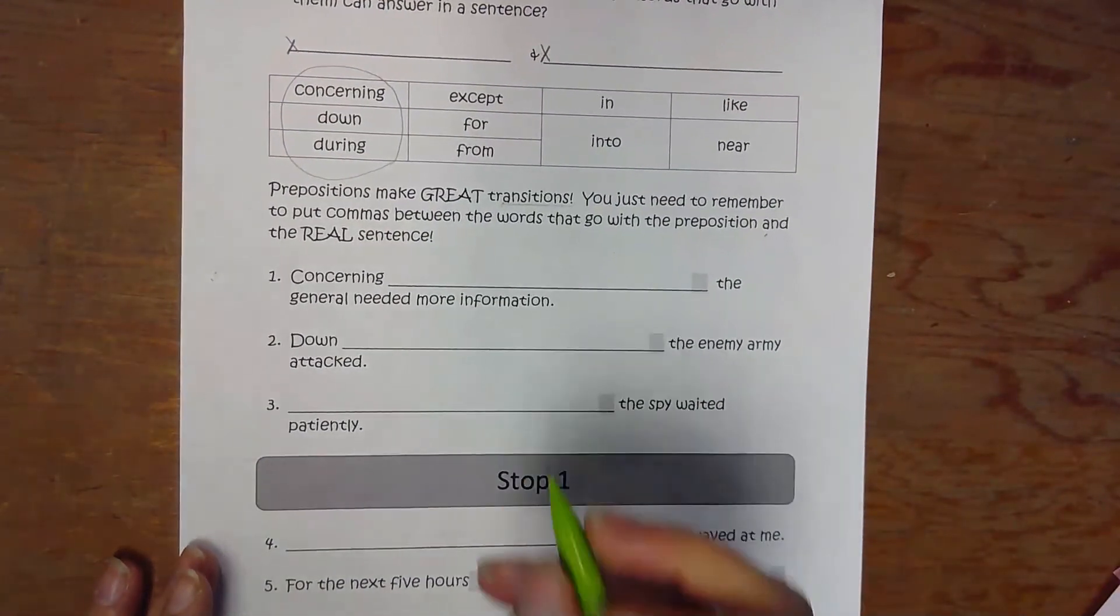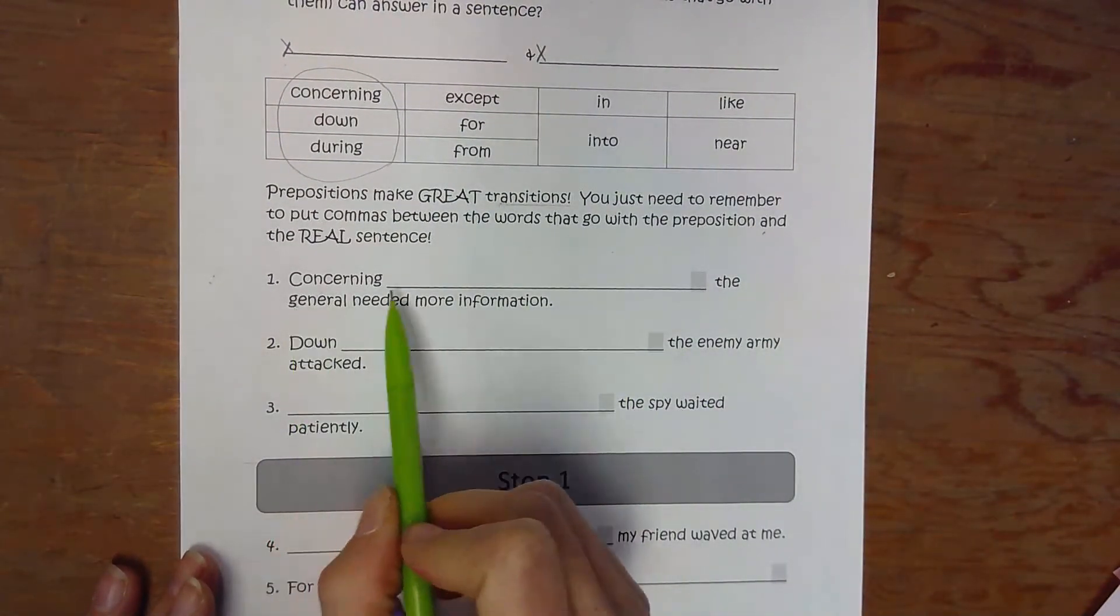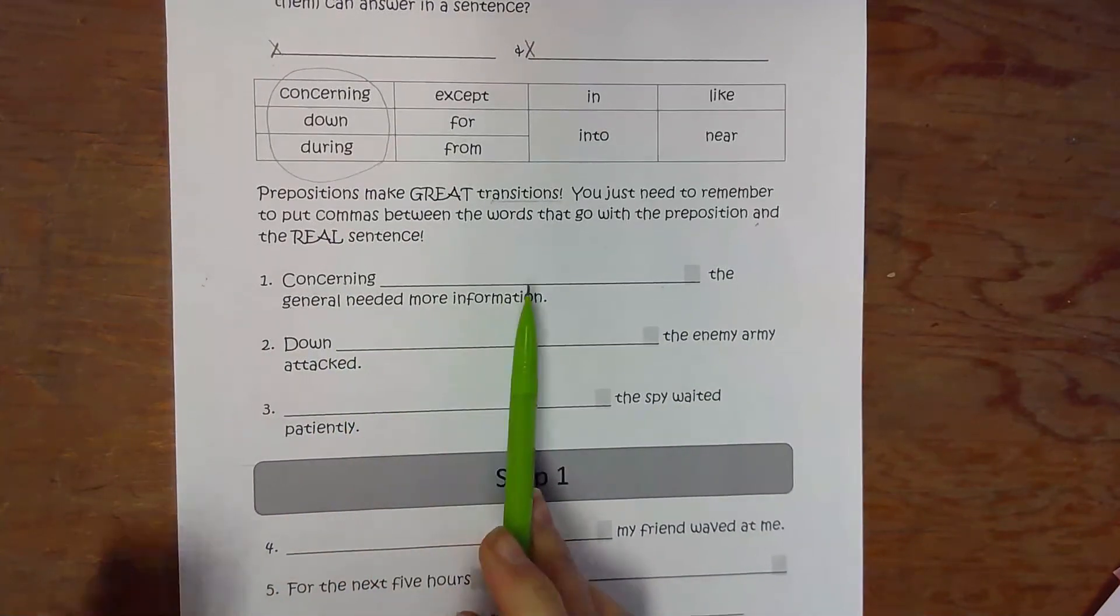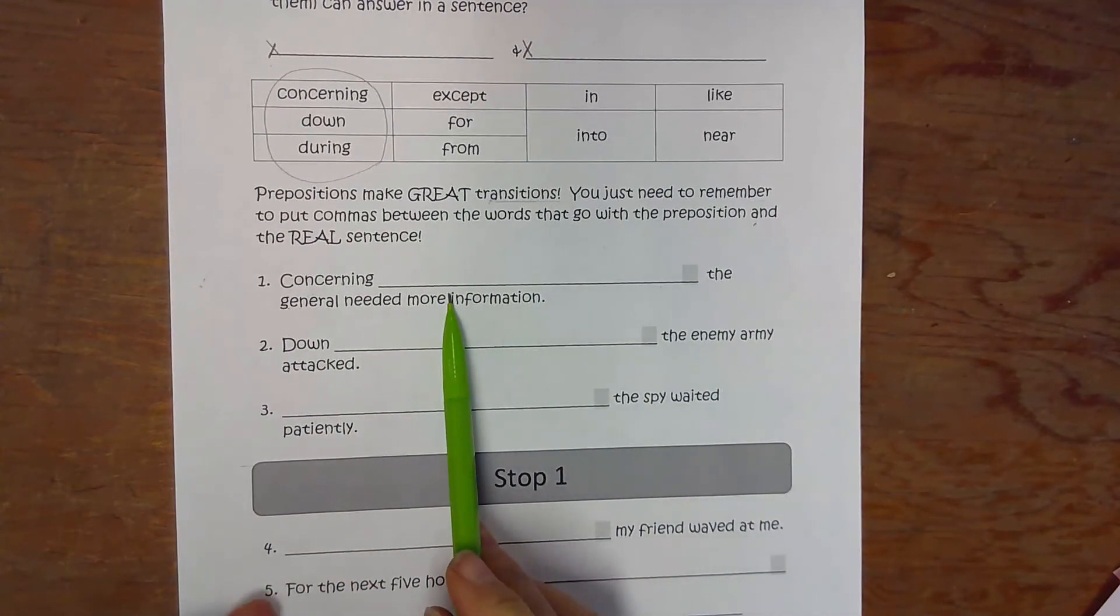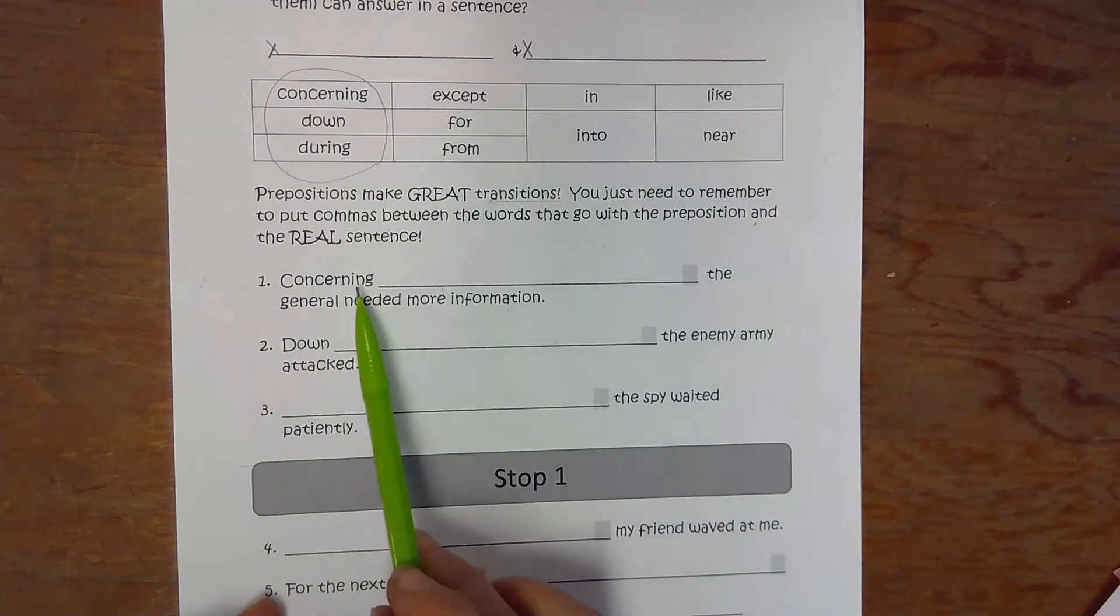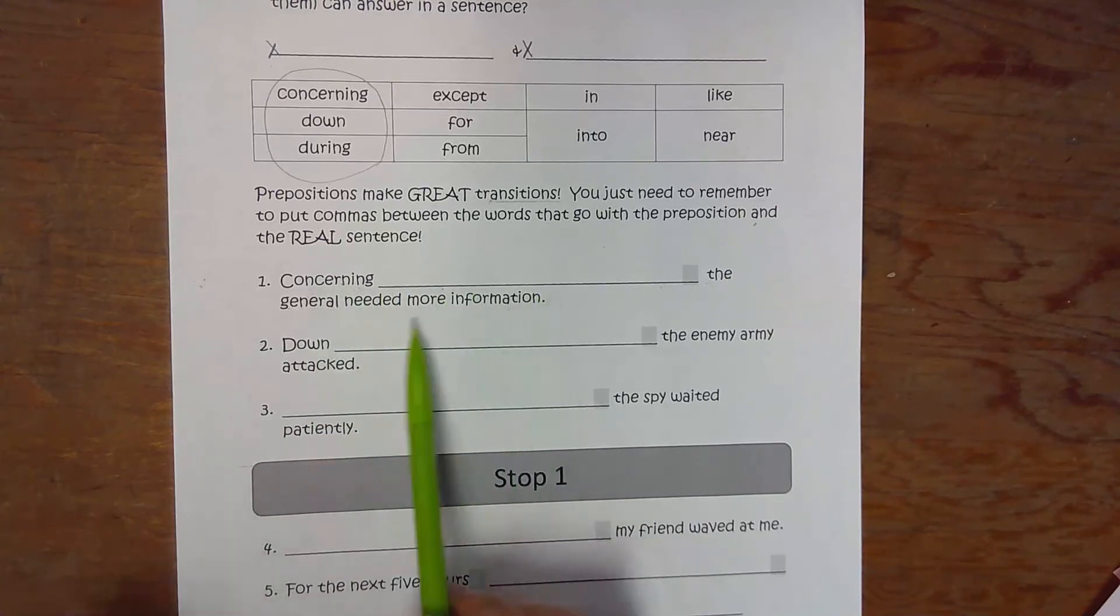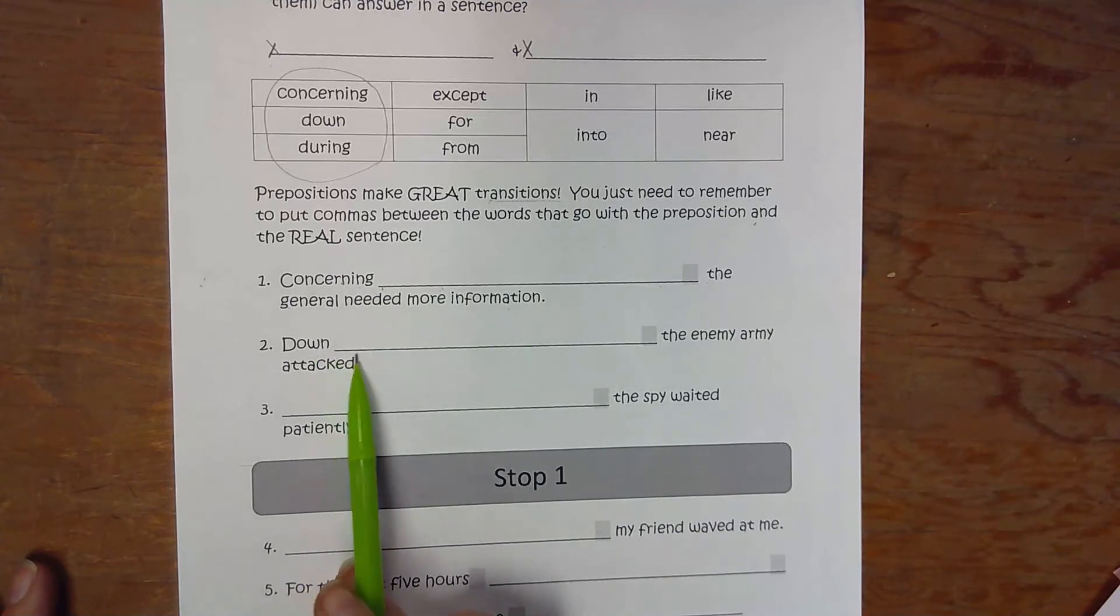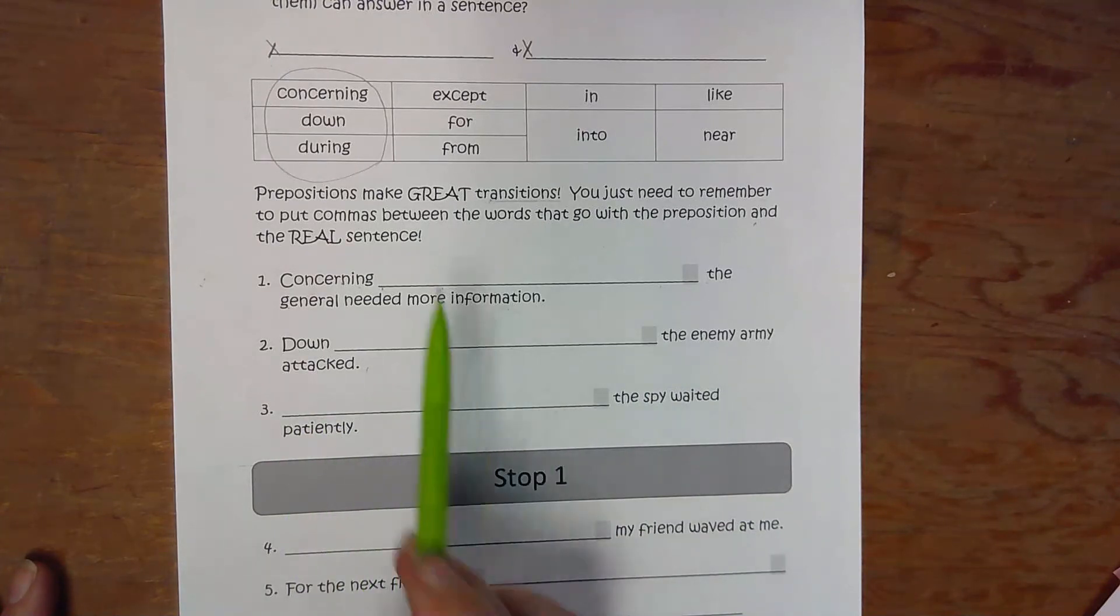Hopefully you don't need these reminders too much longer. You need to figure out what you have to do to fill in the rest of the prepositional phrase. It's starting with concerning. Concerning what? You ask yourself that in a way that makes sense to say afterwards. The general needed more information. So concerning—you can substitute the idea about—about what did the general need more information? You fill in the blank. Down where the enemy army attacked.